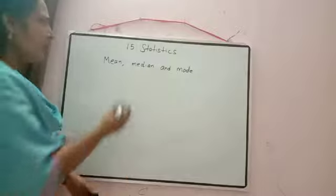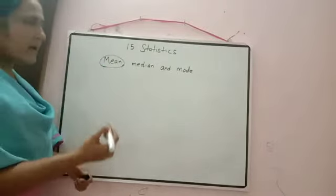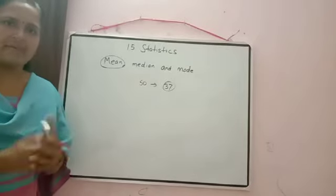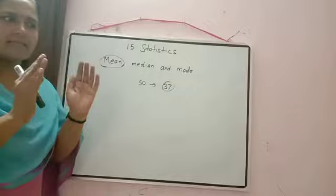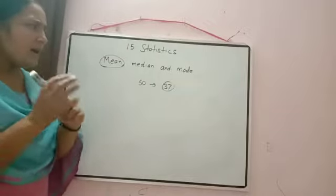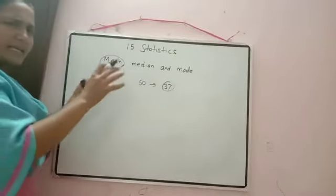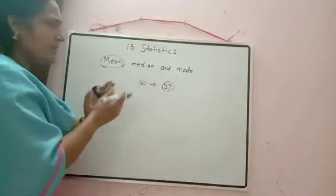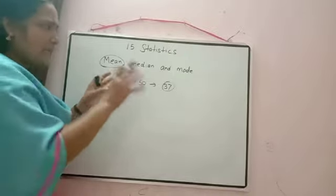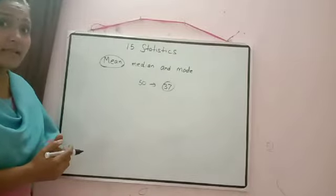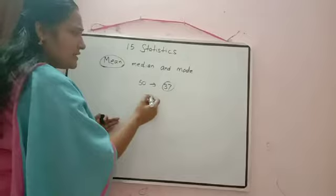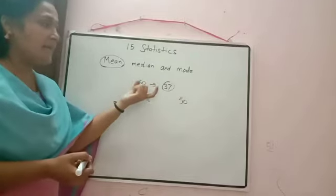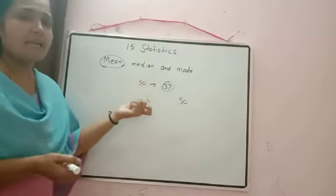Now let me tell you what is the actual meaning of mean or average. Suppose in a class, out of 50, the average mark is 37. The actual meaning of average is: if the average mark is 37, it means the marks of all the students are either equal to 37, or nearly 37 — slightly less than 37 or greater than 37. That is the meaning of average.